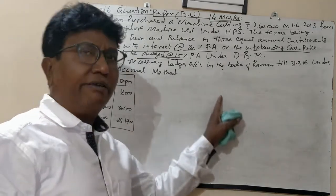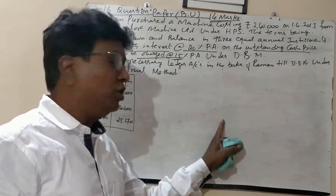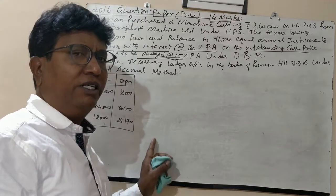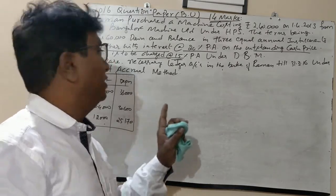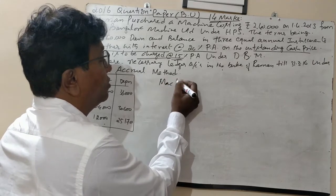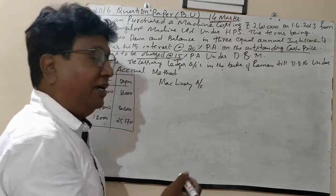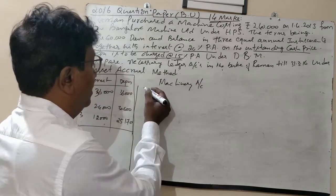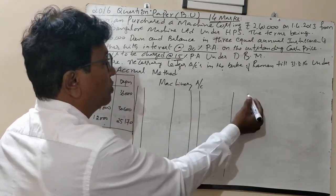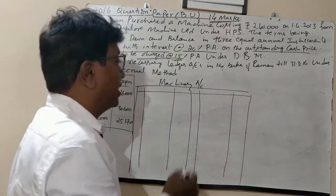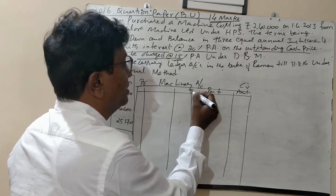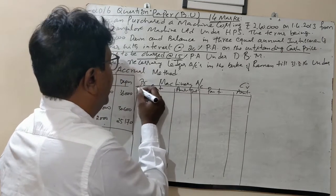We have calculated interest as well as depreciation. Now, what are the necessary ledger accounts we have to prepare? First, we need to prepare a machinery account, also called an asset account. Set it up with a date column, particulars, and amount on both the debit and credit sides.